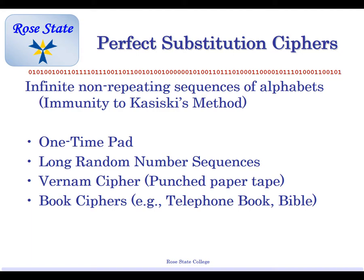Infinite non-repeating sequences are a way to make perfect substitution ciphers that can't really be broken. If you have an infinite non-repeating set of alphabets — with 'Dickens' repeating, that's why we could break it. There's something called a one-time pad: think of a huge string of numbers that go on forever, all random, with no repeating. Or a long random number string, or a punched paper tape, or a book like a Bible. You and your counterpart agree on a specific page — whatever's on that page is your key, and it's not repeating.